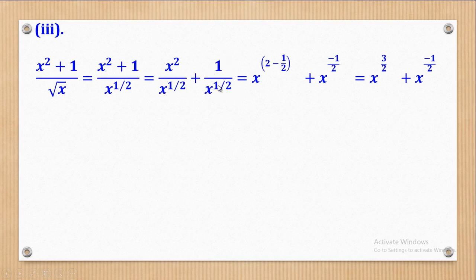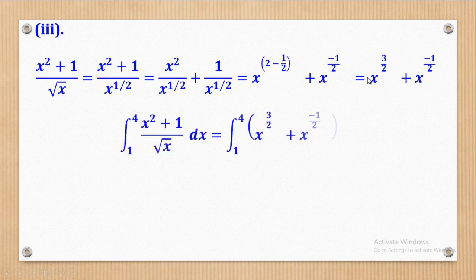For the second part, it's the rule of negative indices — x to the positive one half in the denominator becomes x power negative one half. So when I simplify 2 minus one half I get 3 over 2, giving x power 3 over 2 plus x power negative 1 over 2. I have now simplified the expression into the form of a polynomial, so I can integrate.